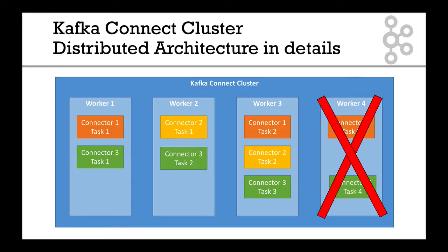Now something happens and worker number four dies. The server just crashes, you lose its network — you just lose that worker. What happens is that you get into a rebalance, the same way we have a rebalance when a consumer dies in a consumer group, we have a rebalance if a worker dies in a Kafka Connect cluster.